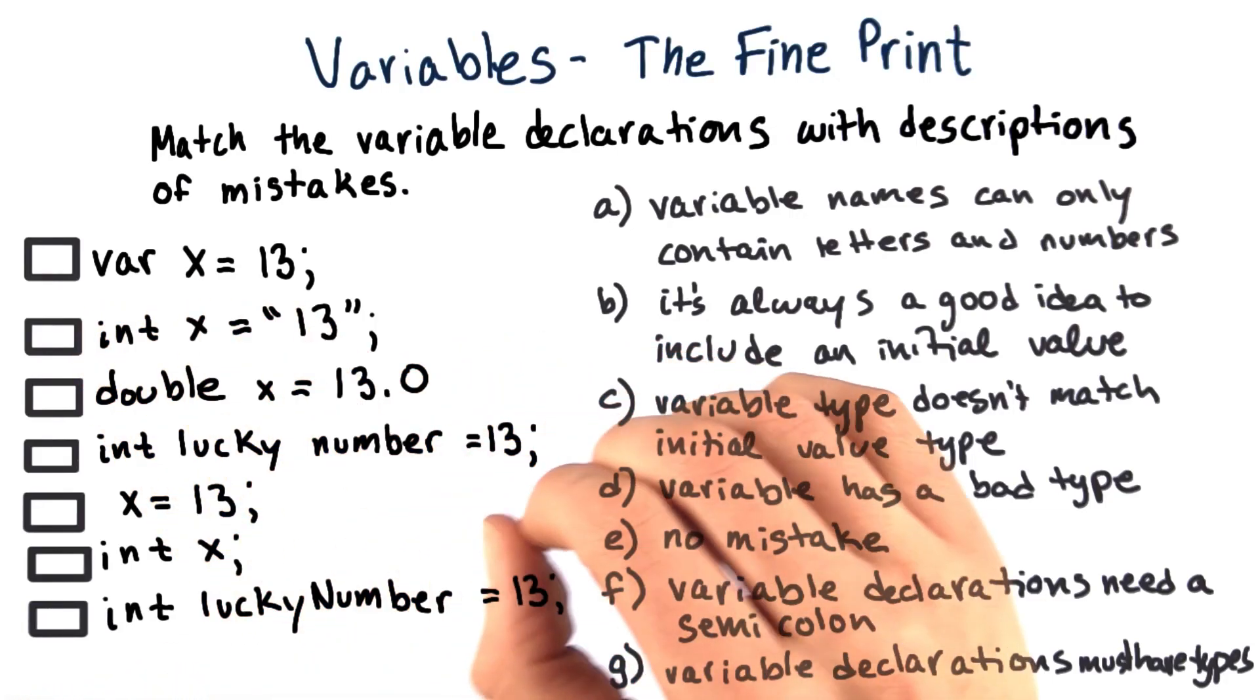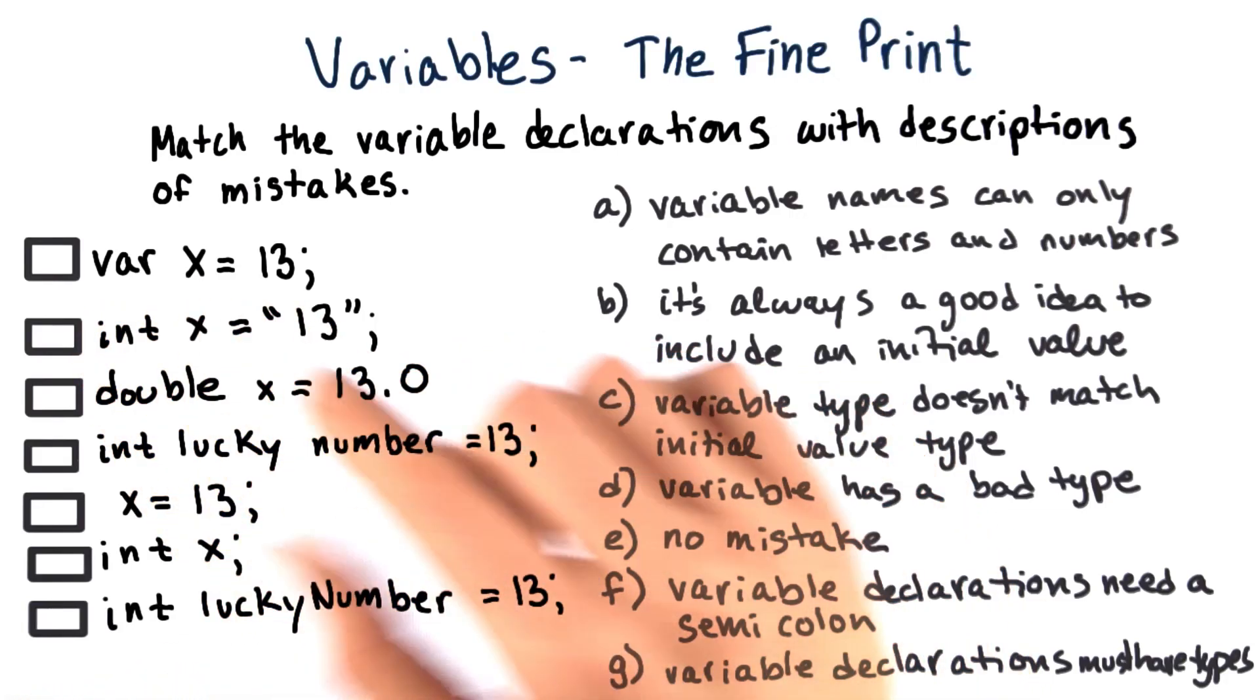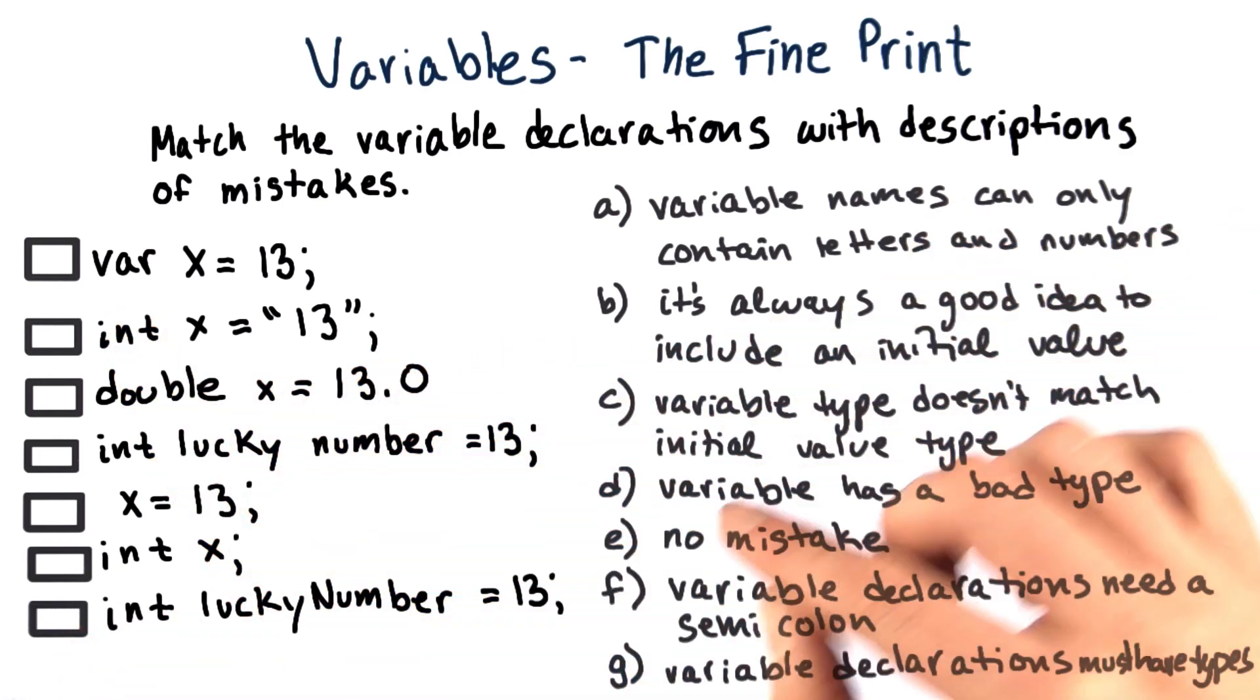Let's look at the first one. This variable declaration says var x equals 13. Well, var isn't a type that we've seen yet. So it looks like the answer is D. The variable has a bad type.